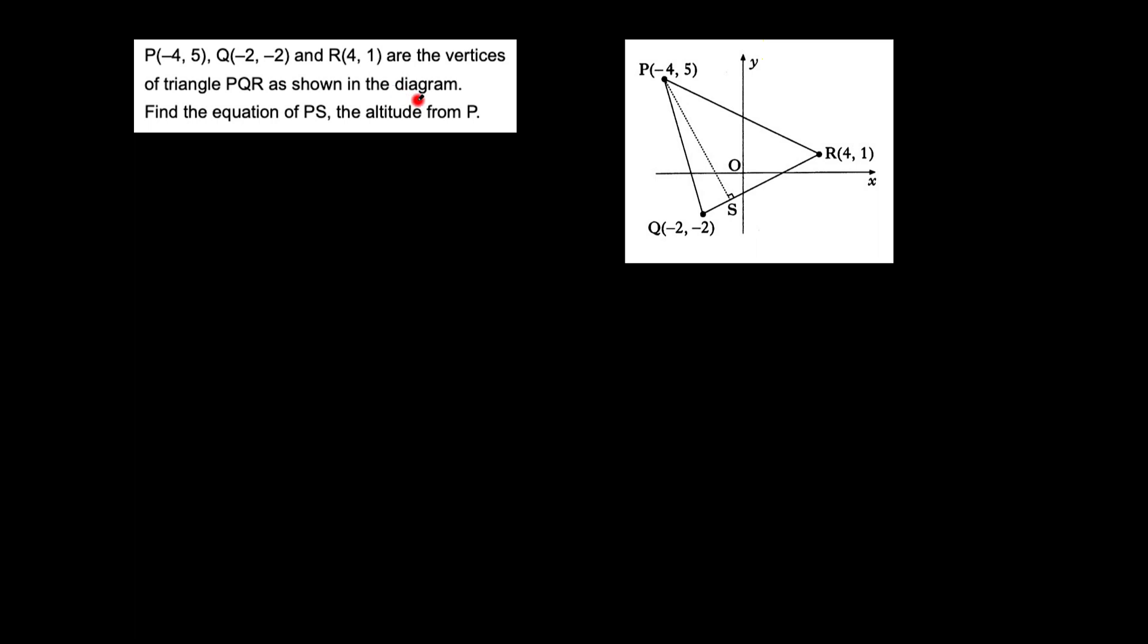Today we'll be looking at a question here where it says P(-4, 5), Q(-2, -2), and R(4, 1) are vertices of a triangle PQR as shown in this diagram, and find the equation of PS, the altitude from P.